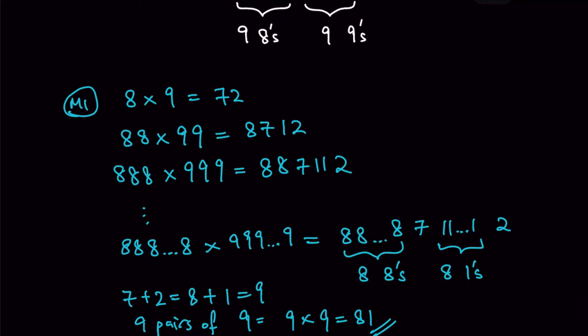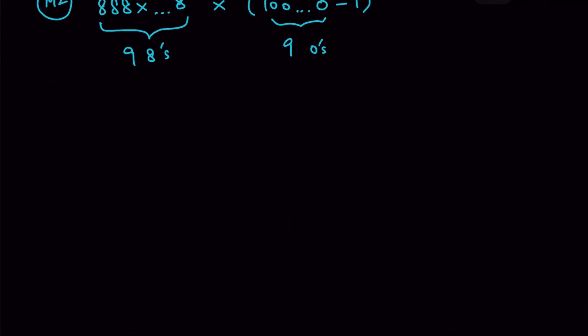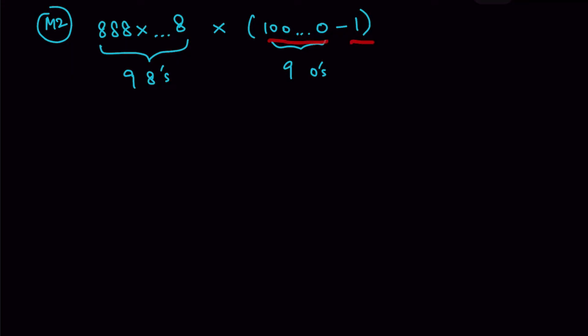For method 2, it involves a bit of calculation. We rewrite the expression as nine 8s times (1 followed by nine zeros minus 1), changing the nine 9s into (10^9 minus 1).